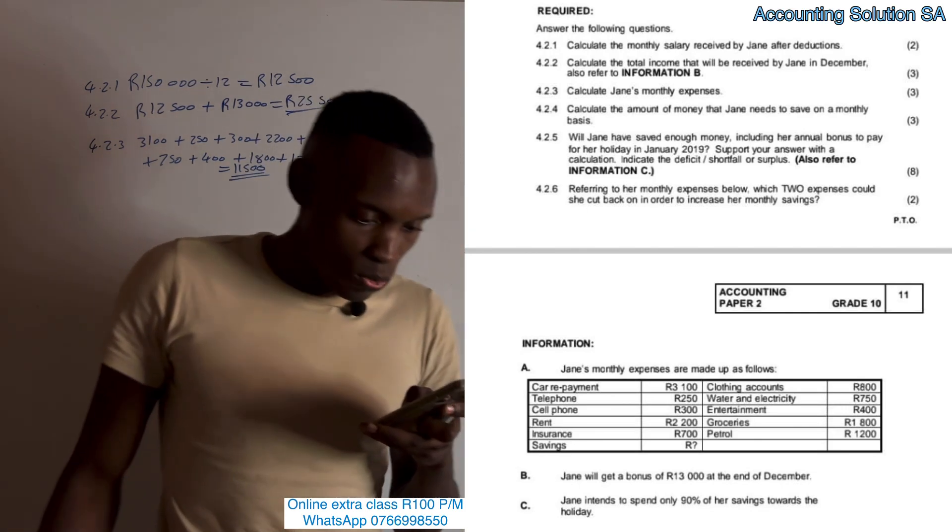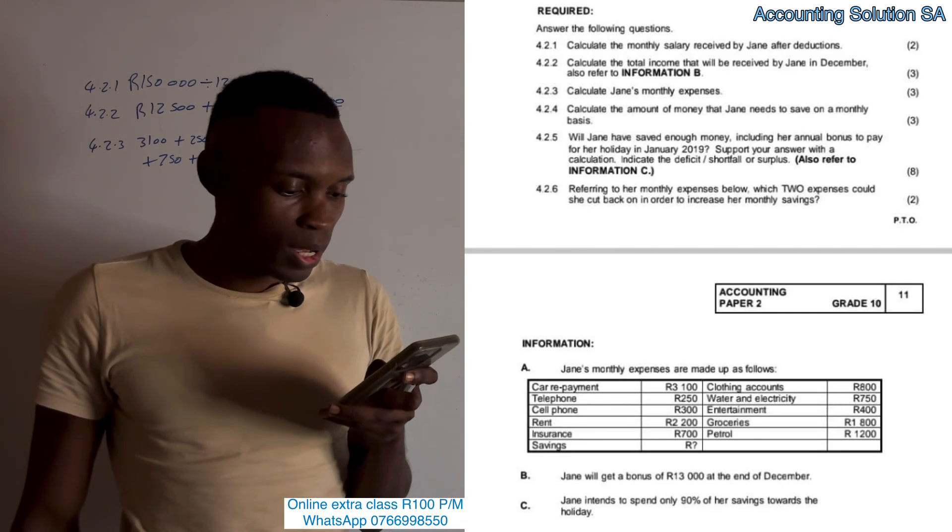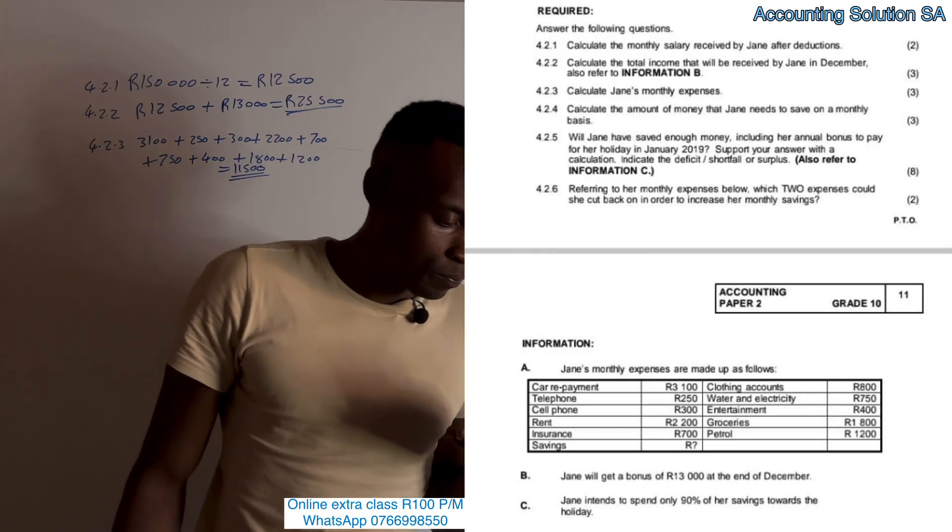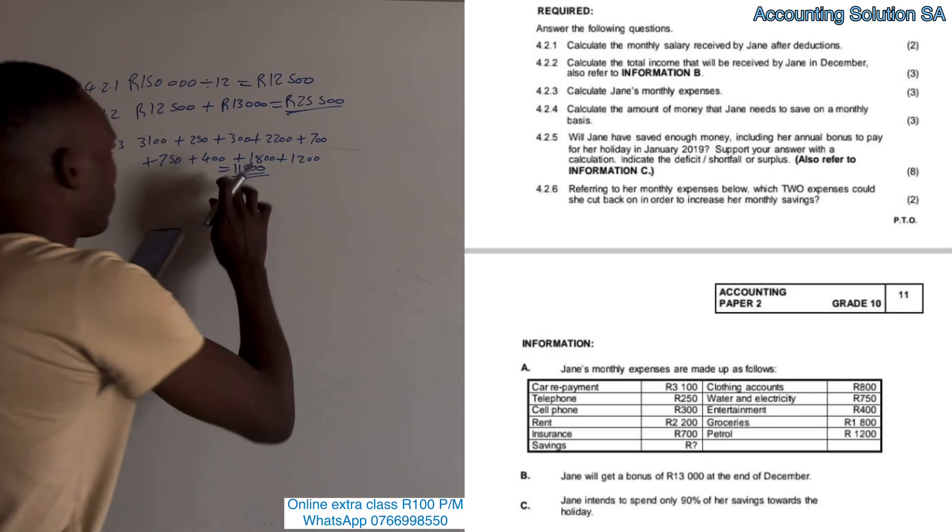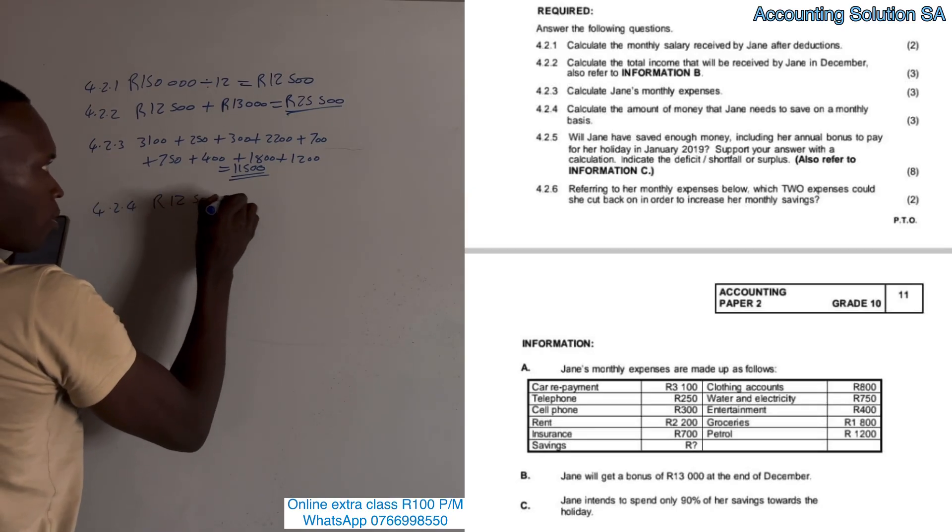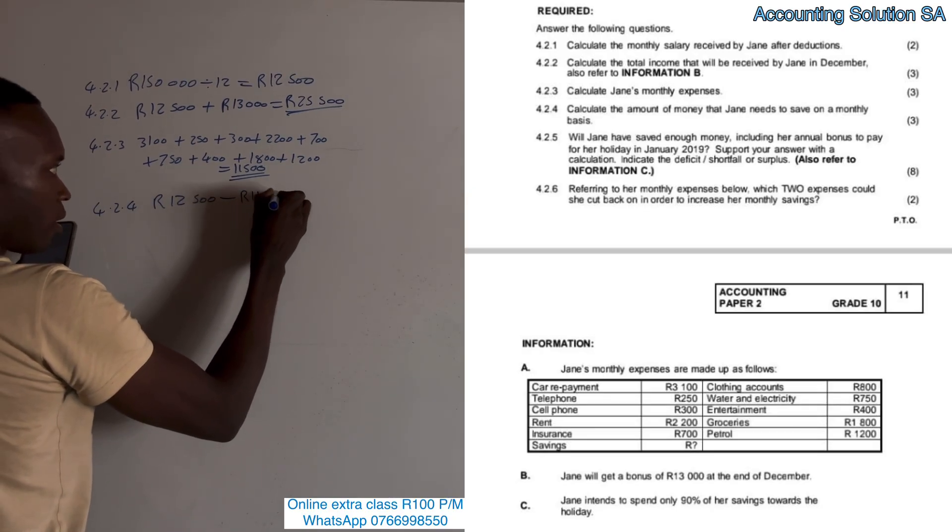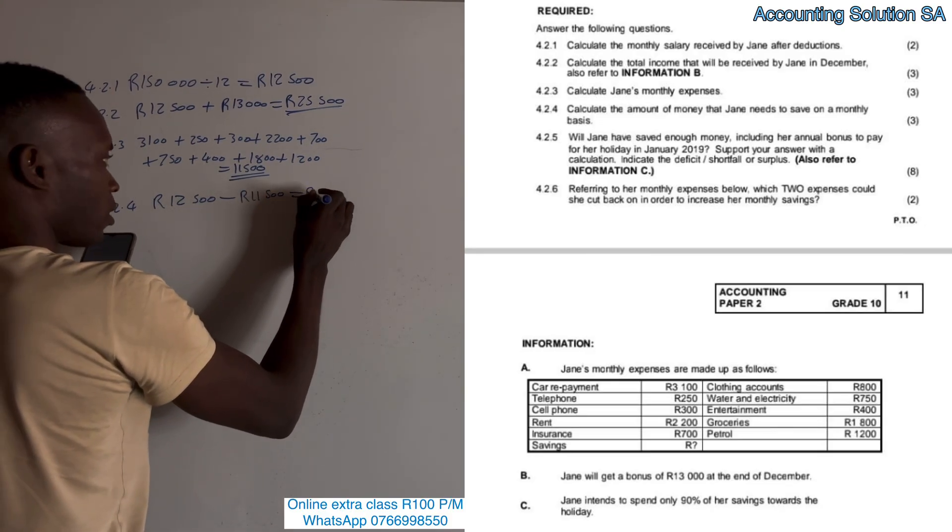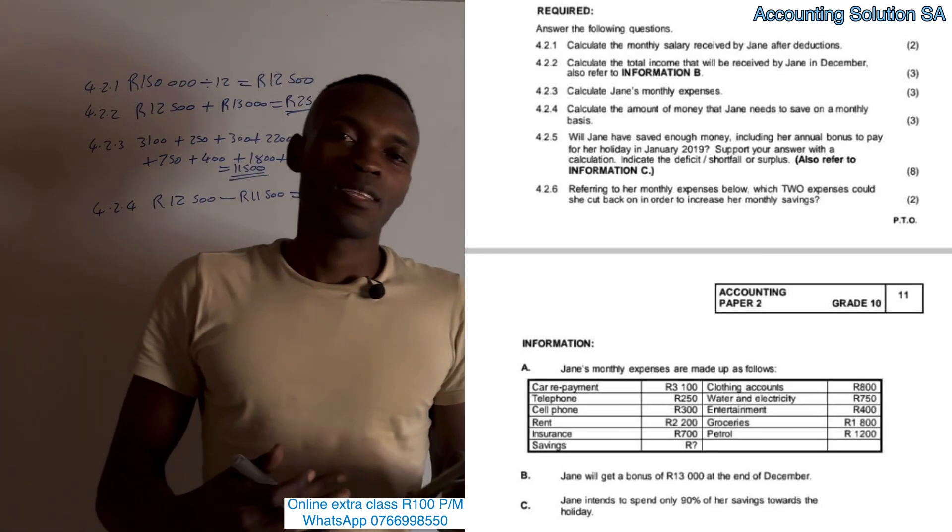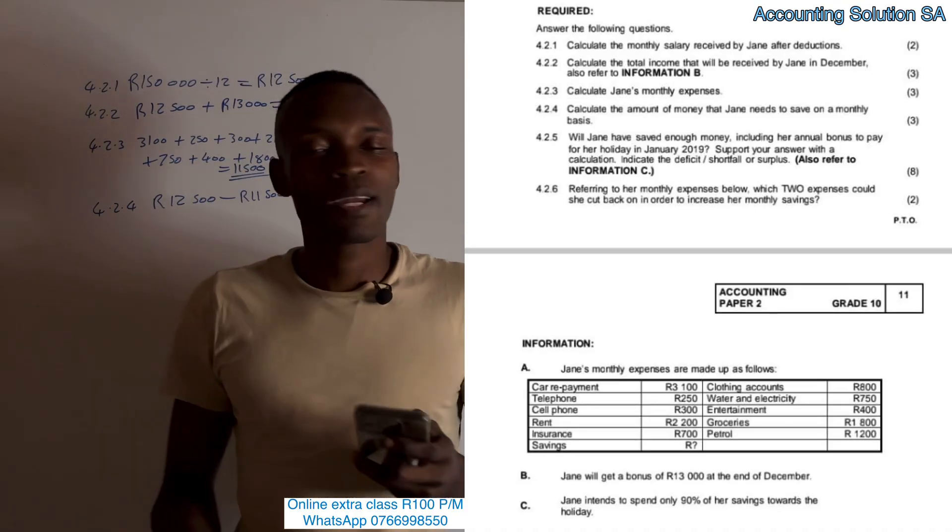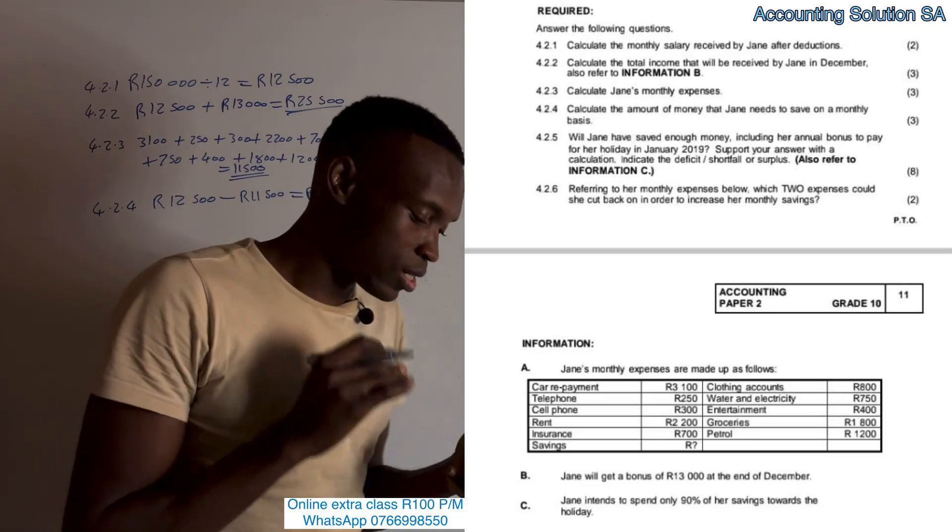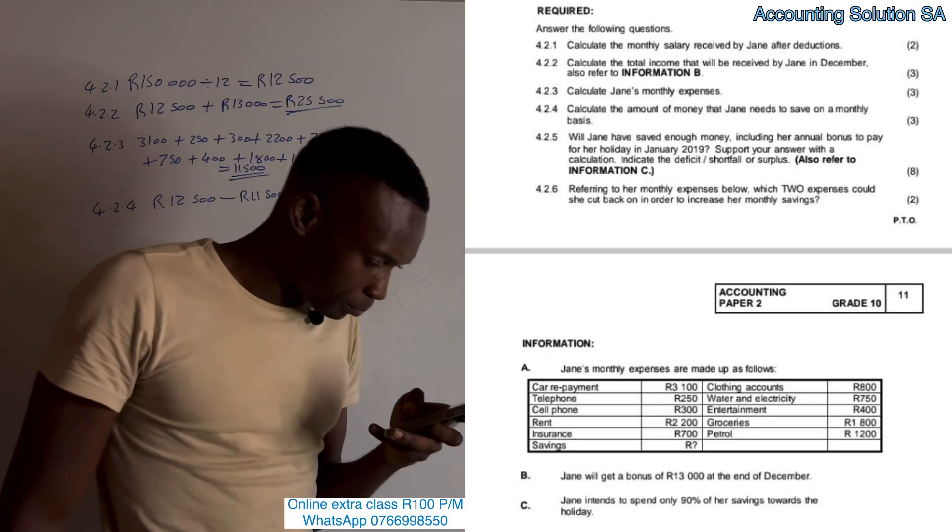The next one says calculate the amount of money that Jane will need to save on a monthly basis. If that's all the expenses, what she can save each and every month is R12,500 minus R11,500, which means she saves R1,000 every month. But emergencies can happen anytime - when you're pressing your phone, Vodacom can send you an SMS saying you have 20 megabytes left. Obviously you're going to take it from there.